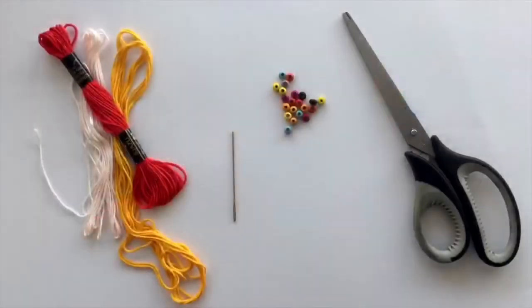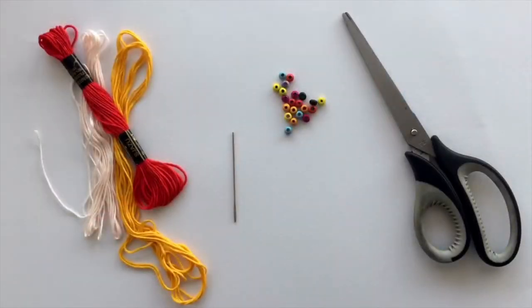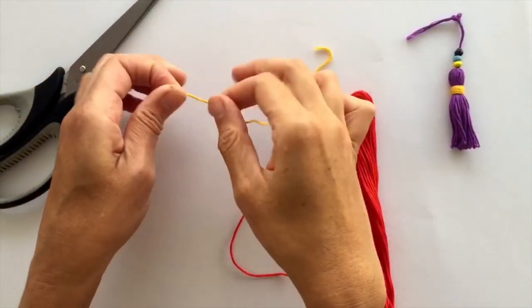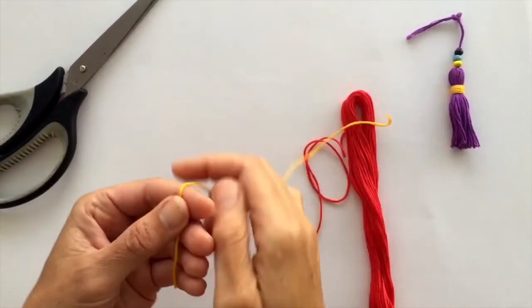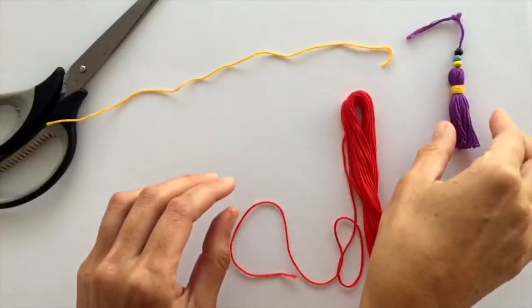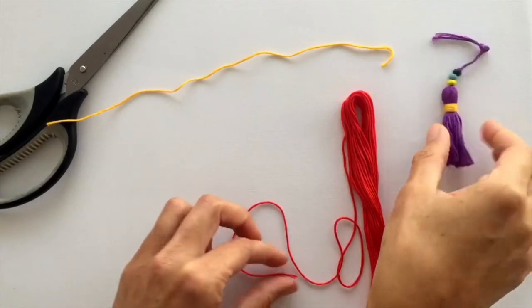First, you cut a little piece of thread about two times your hand - we're going to keep it for later. To make this size of tassel, you're going to wrap around your hand about 25 times.